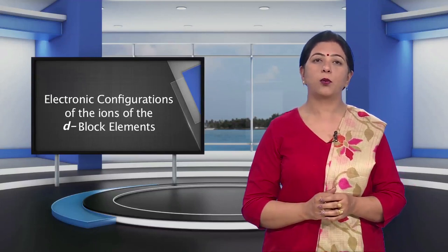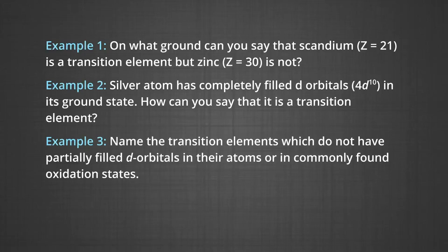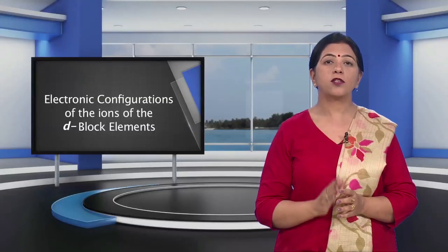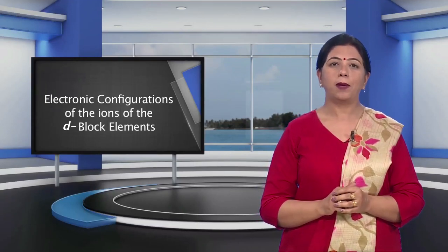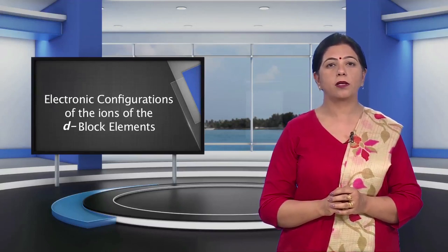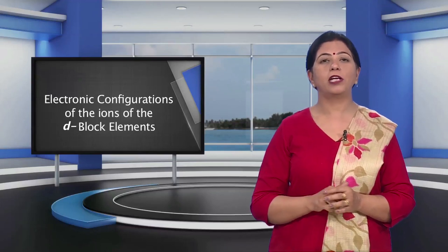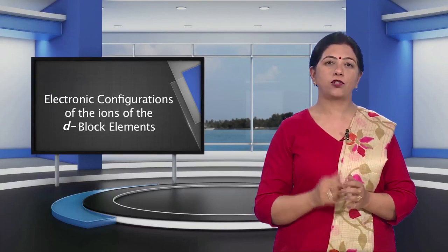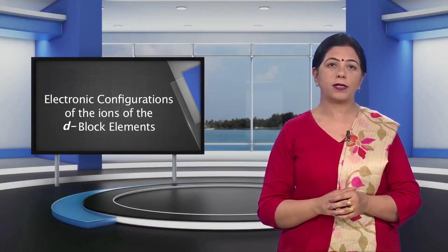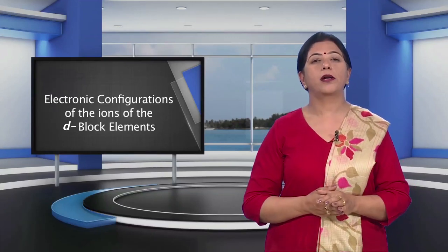Due to this reason, we can say that silver is a transition element. Next question: name the transition elements which do not have partly filled D orbitals in their atoms or in commonly found oxidation states. The last member of each transition series — that is zinc, cadmium and mercury — are not regarded as transition elements, because they do not have partially filled D orbitals in their atoms as well as in simple ions having an oxidation state of +2.